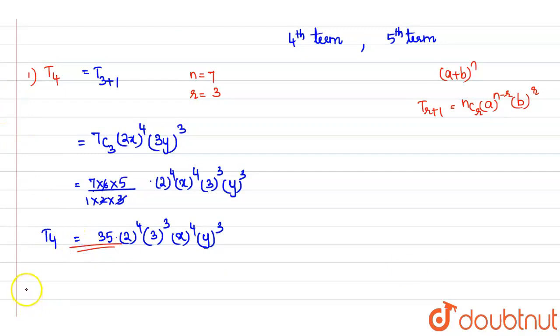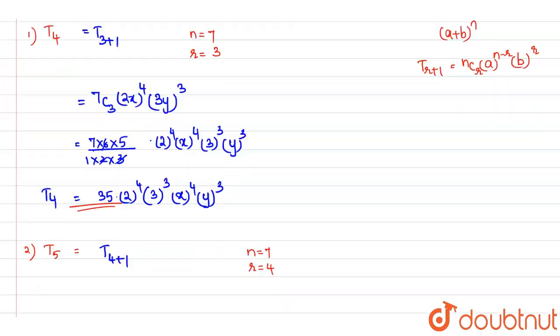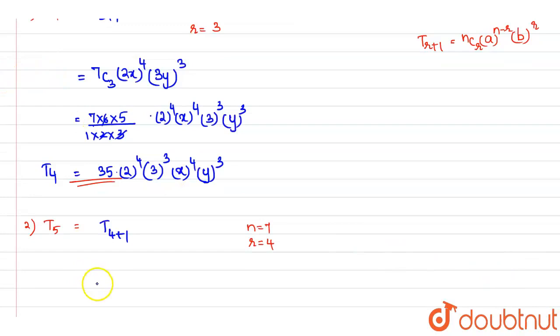Now next we need to find out t5. T5 can be written as T_(4+1). So in this case, we have to take the value of n is equal to 7, r is equal to 4. Again, substituting in the formula, we get 7C4 × (2x)^3 × (3y)^4.